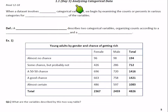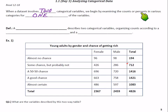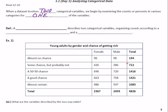Day 3: Analyzing Categorical Data. The first part here — let's fill in these first two blanks. It says when a data set involves two categorical variables, we begin by examining the counts or percents in various categories for one of the variables. So it follows logically: we start by looking at one variable at a time. We don't start by looking at them together.